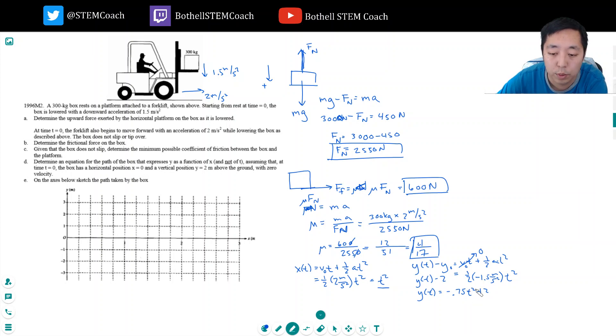But we already said that t squared is equal to x, so I can write this as y equals negative 0.75x plus 2. What I did was I just used my kinematic equations to solve for x and y, and then I replaced, I got rid of t by replacing t squared with x. I just solved for t and then plugged in for x there.